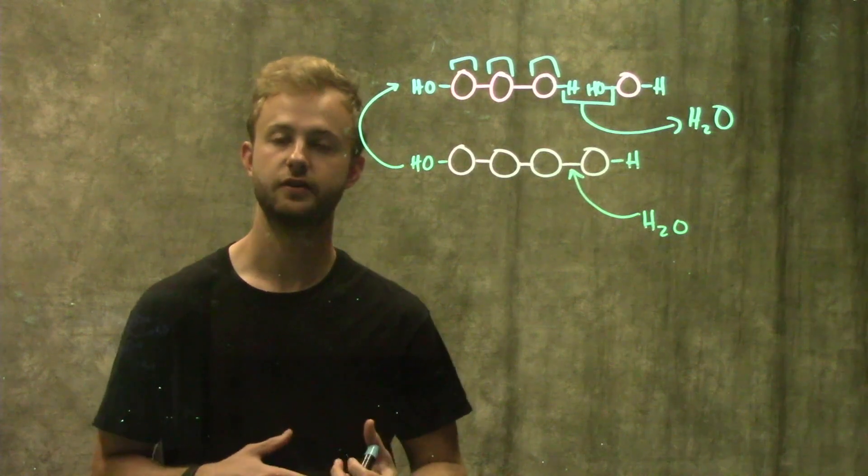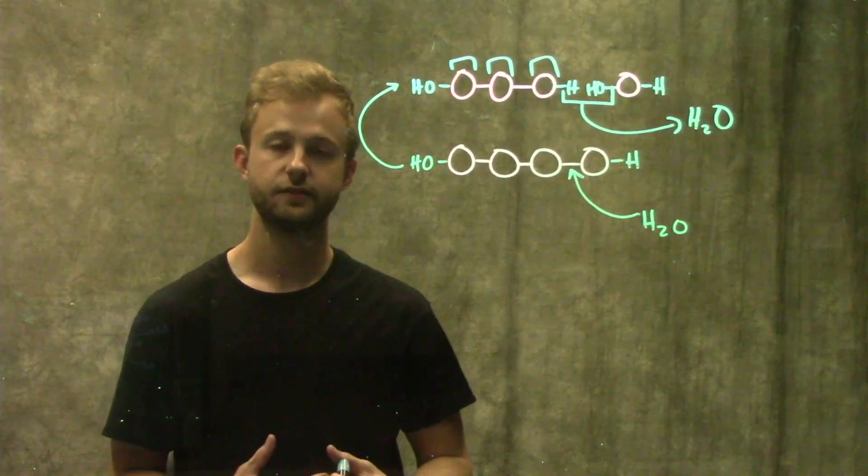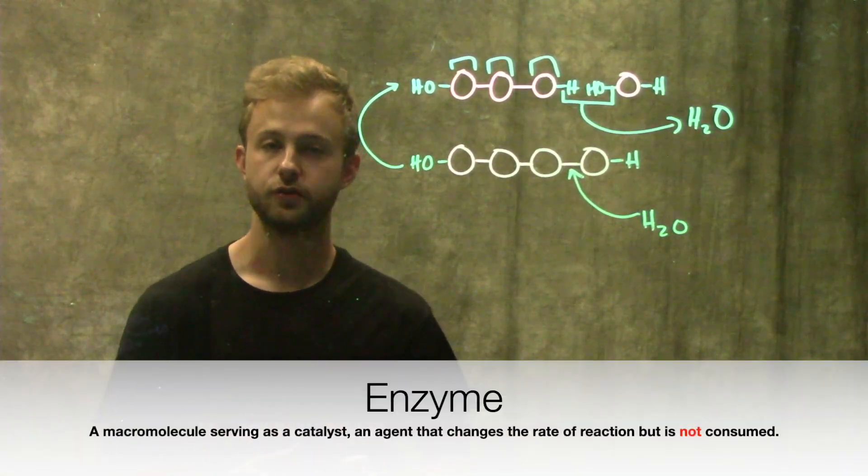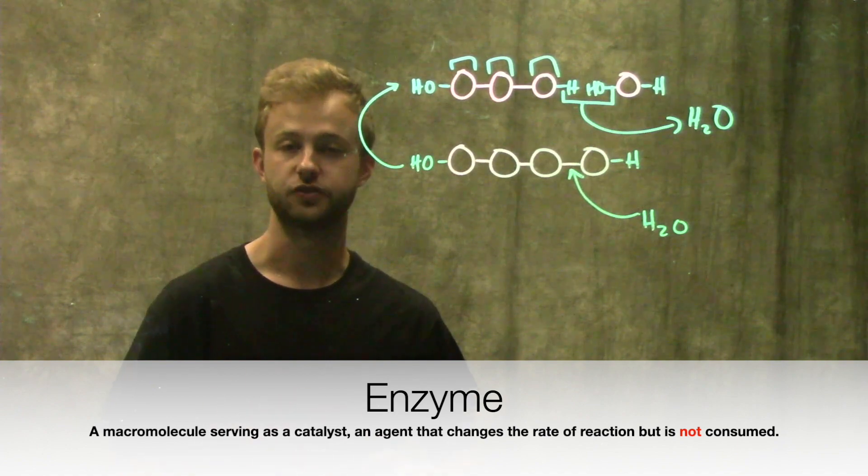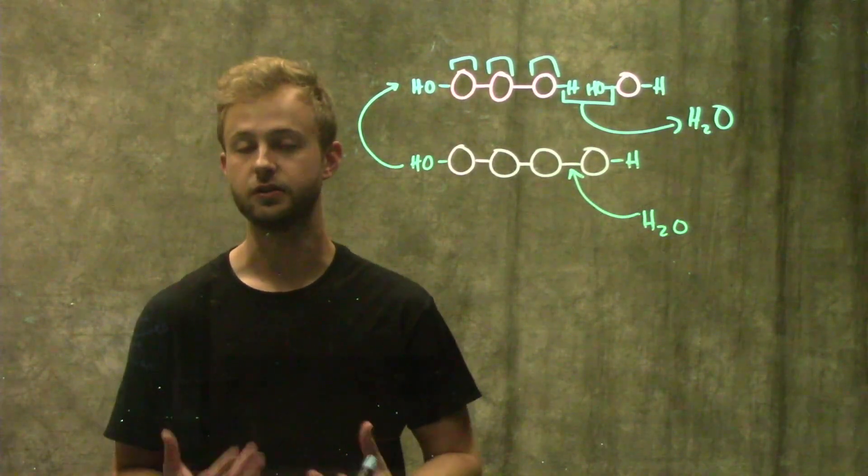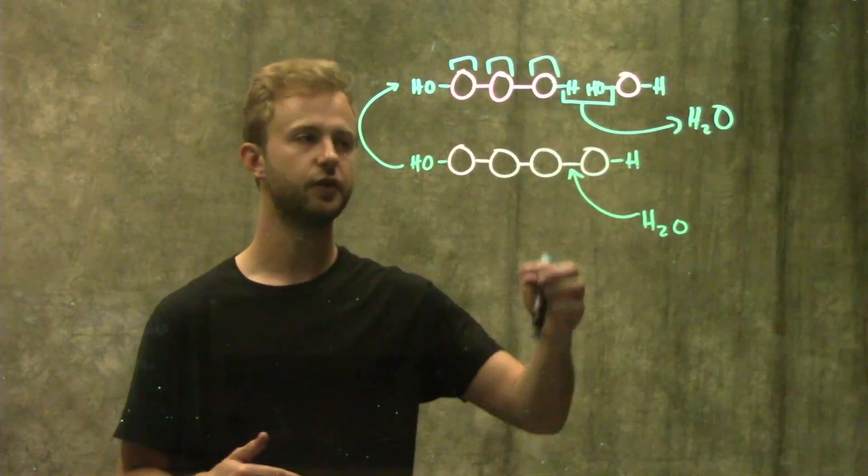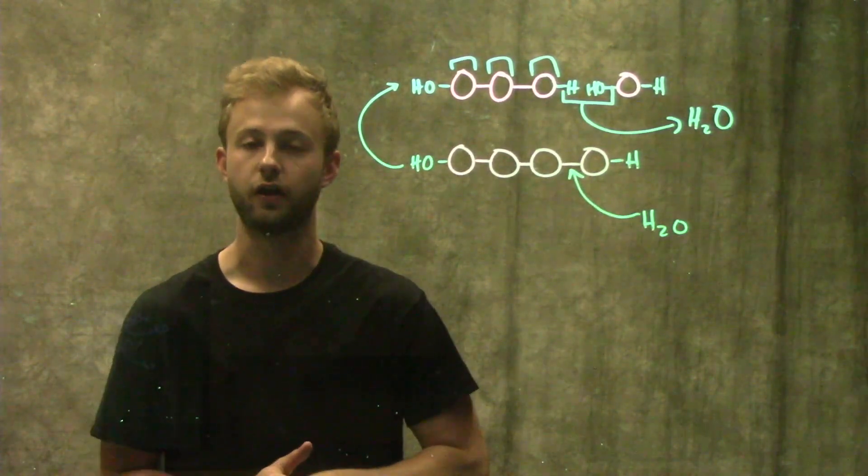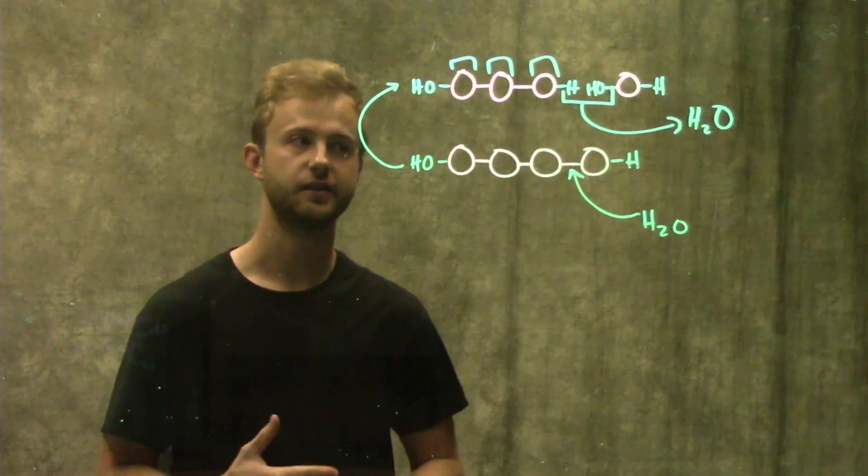In cells, these processes are often done by enzymes. Enzymes are large proteins in our cells that help speed up chemical reactions to help them take place at a rate that's useful for our cells and bodies. Both of these processes are assisted by enzymes in the cells.